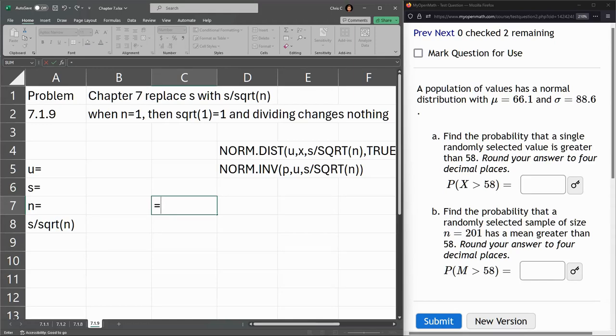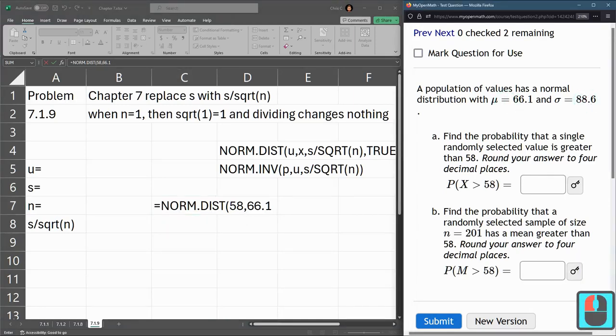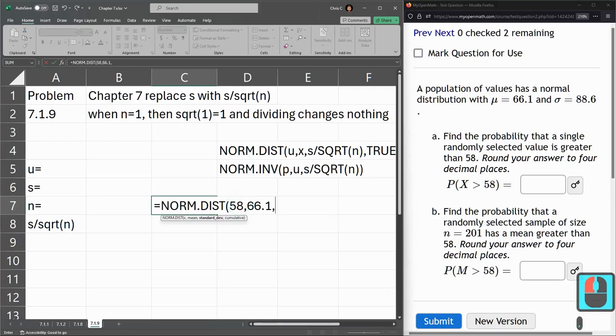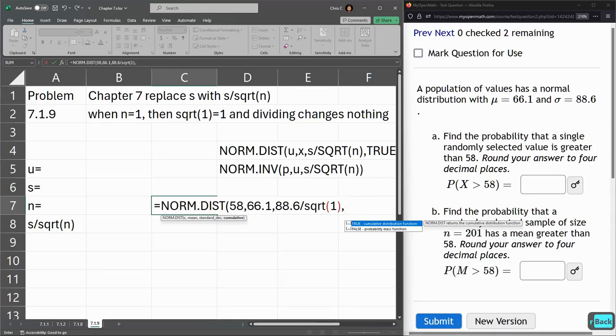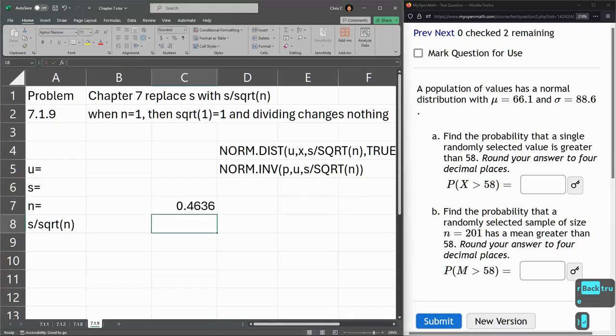So we'll start out norm.dist. Tab to get that. Our value is 58. And we're using 66.1 is the average. That's the mu right there. Standard deviation, 88.6. And we're taking a single value. So our n is 1. So divide by square root of that 1. That's n. And true.